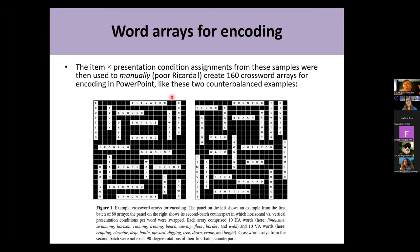The crosswords look like this. We used these allocations to manually create — and my poor student had to do this — 160 crossword areas for encoding in PowerPoint. That's a nice thing about studies like this: it can be done with very cheap equipment. Here are two counterbalanced examples: one from the first batch and one from the second batch where presentation conditions per word are flipped, and the crosswords are not exact 90-degree rotations, so spatial placement was kept quite arbitrary.